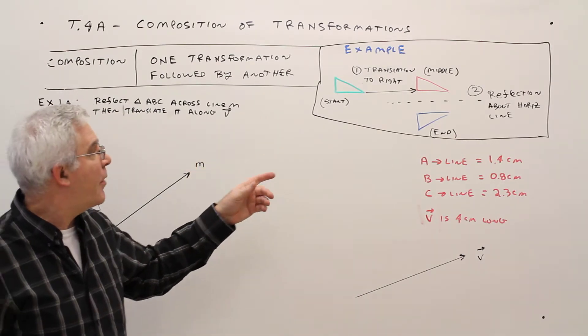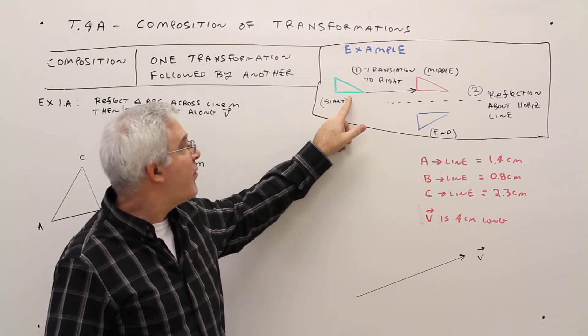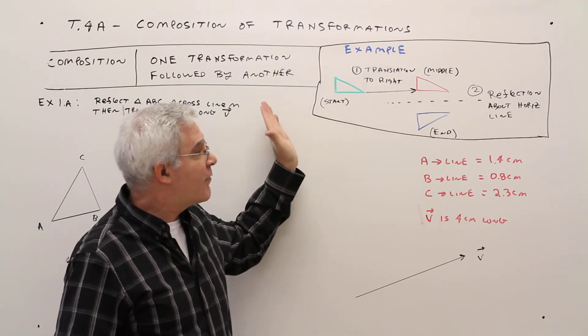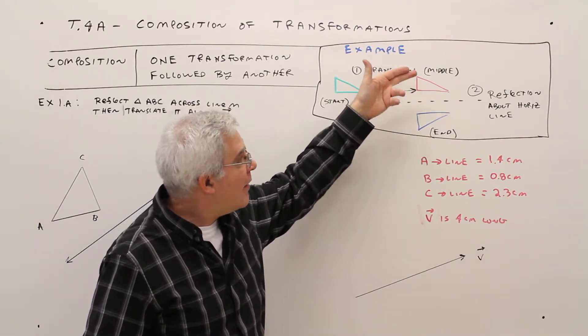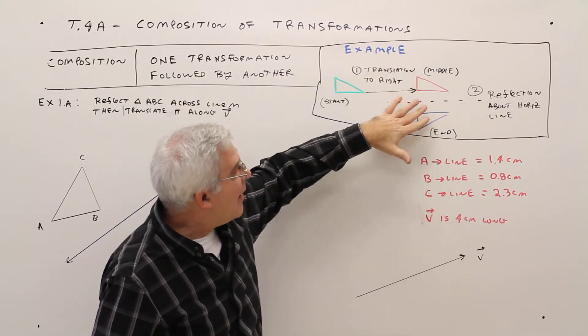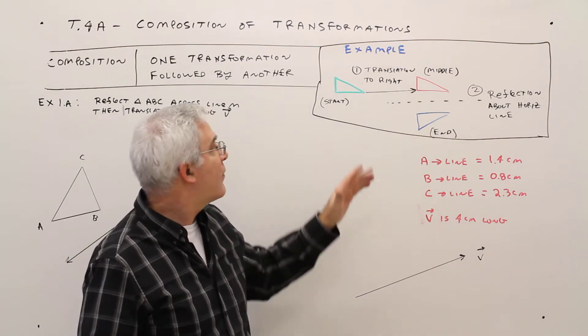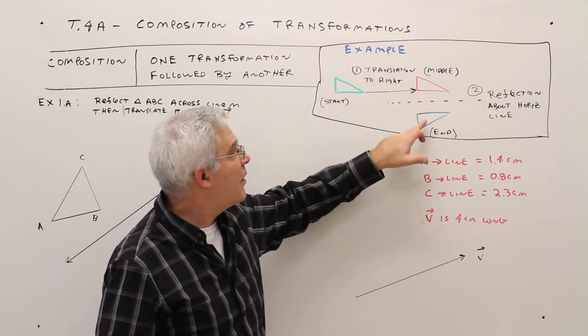Alright, here's an example. Let's start with this green triangle here. Let's just translate it to the right. And then after we translate it to the right, let's reflect that about this horizontal line. So we start, middle, end.